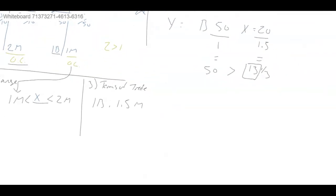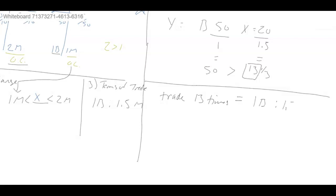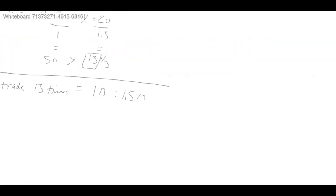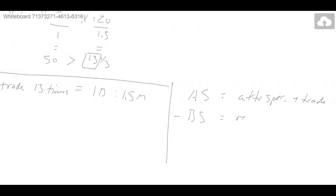So now let's do step five: economic gains. They're going to trade 13 times, and each time they trade one Butterfinger for 1.5 Milky Ways. For economic gains, I compare the situation after specialization and trade to the before-specialization numbers — that's the stuff I put in the red box earlier — which represents what they would have had if they'd decided to just do it themselves. The difference gives us the economic gains.